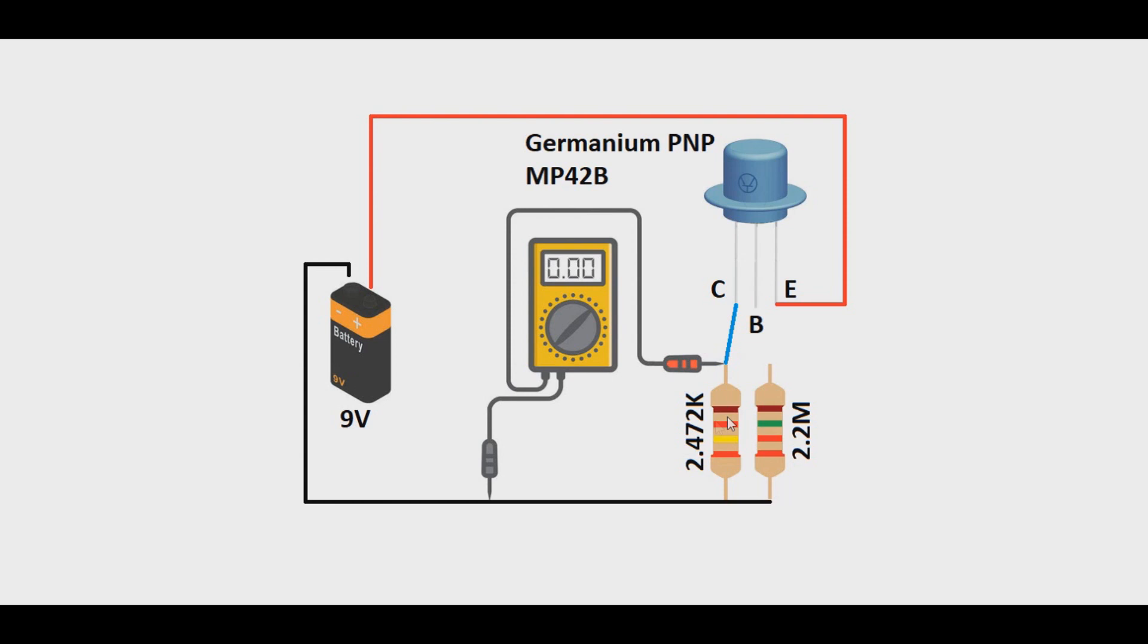The collector resistor right here will convert any leakage current from the transistor into 2.472K voltage that we can then read on the meter. So a 2,472 ohm resistor is 2.472V per milliamp, so a milliamp of leakage will equal 2.472V to come up on the display of the digital multimeter. So in the case of our germanium PNP MP42B transistor, what we got on that measurement there was 0.346V. So divide 0.346 by 2.472V, and we get a leakage of 0.14 milliamps, or 140 microamps.